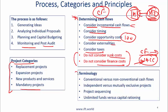Some other fundamental terminology: conventional versus non-conventional cash flow. Conventional cash flow means that you have an expense initially and after that money comes in — so there is one change in sign. Non-conventional means that you have more than one change in sign.